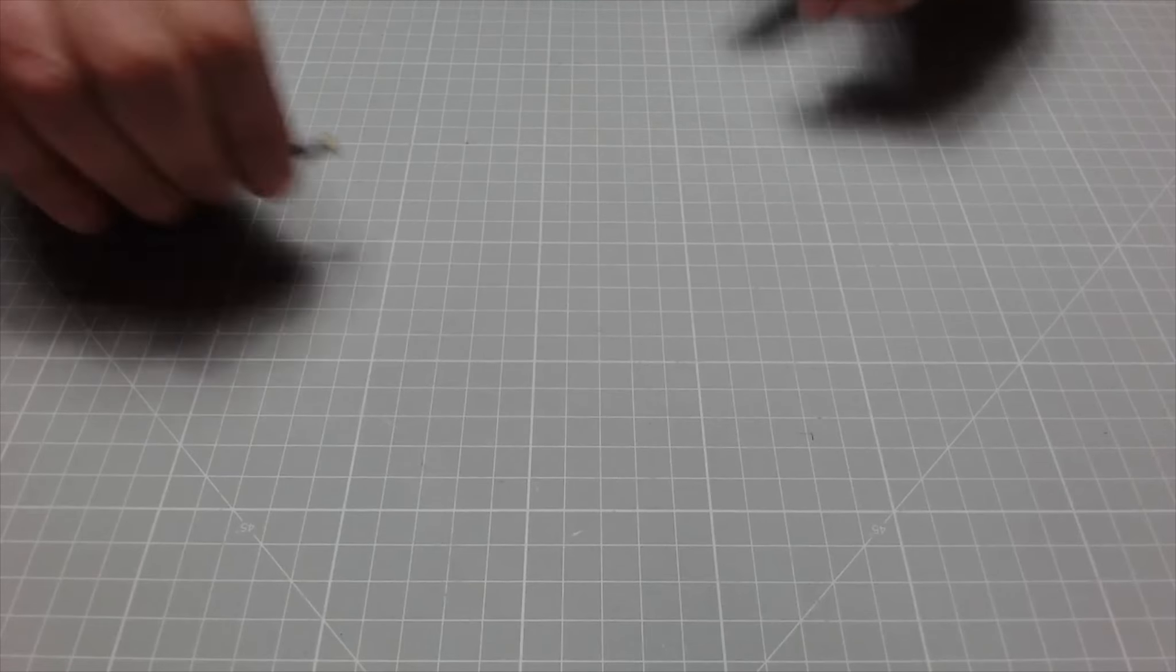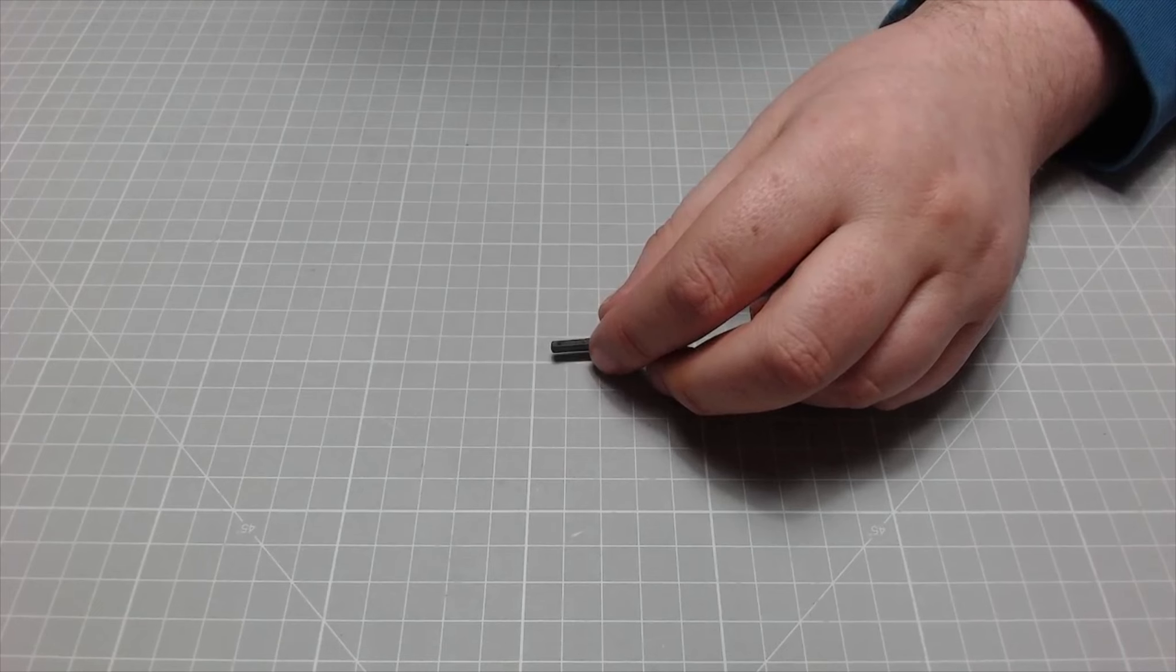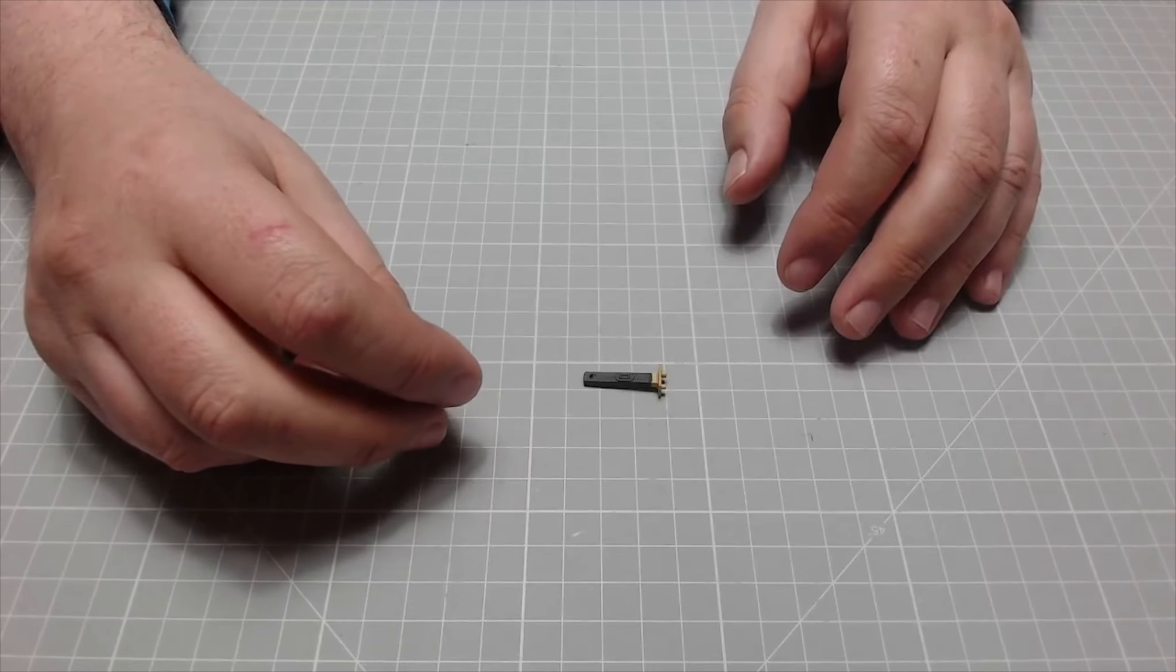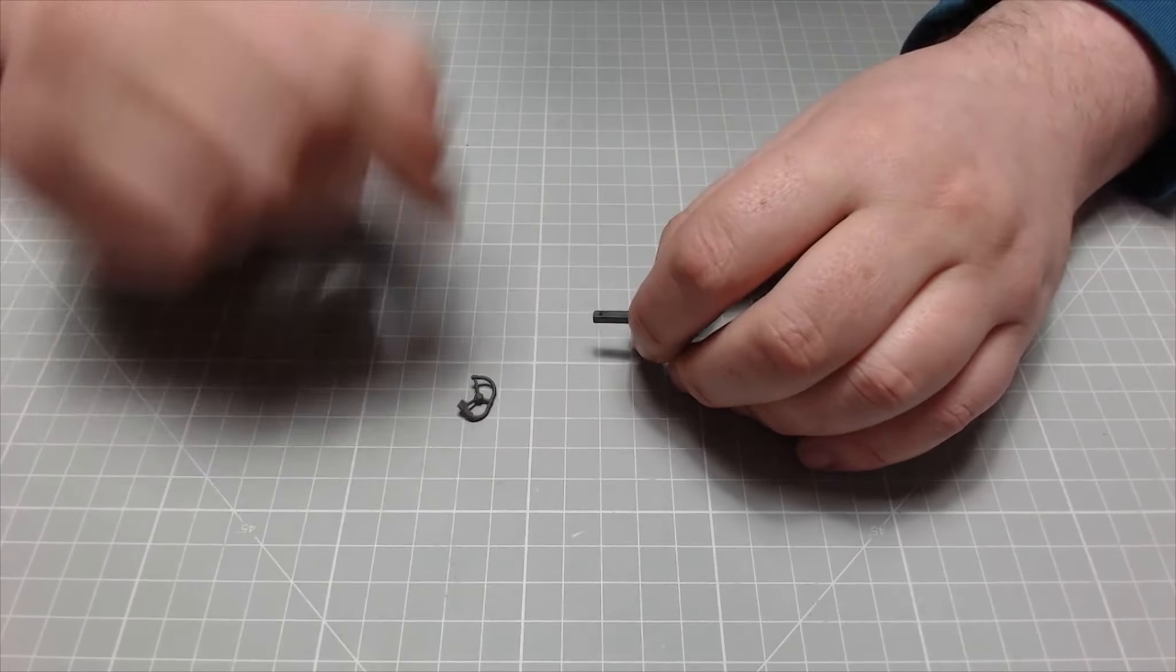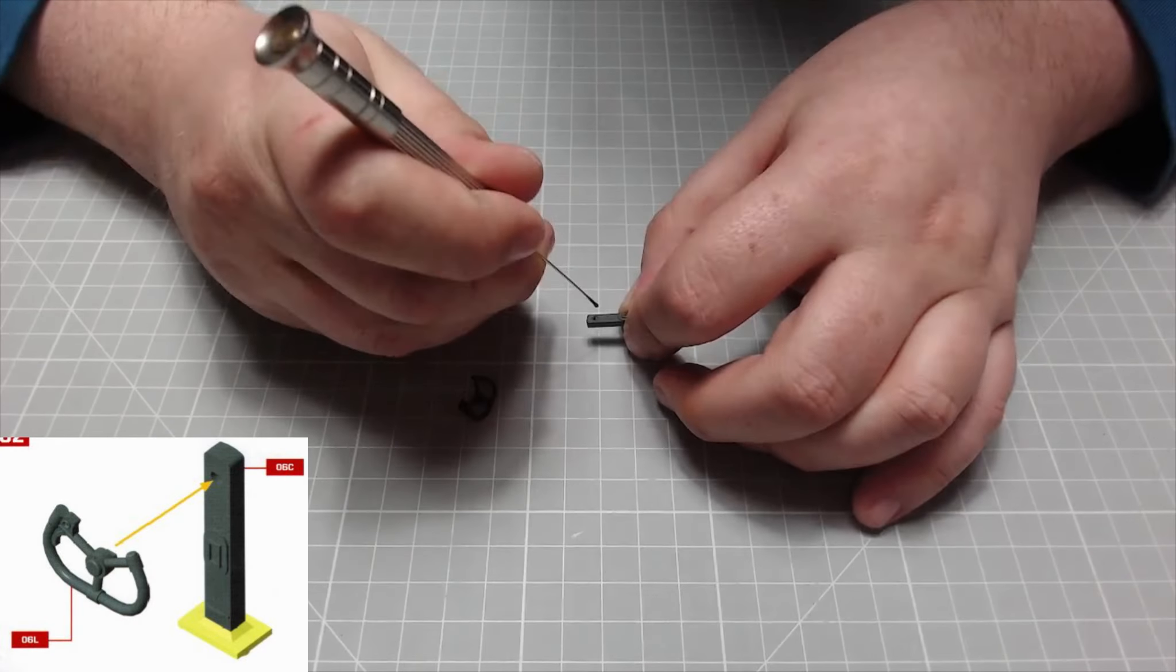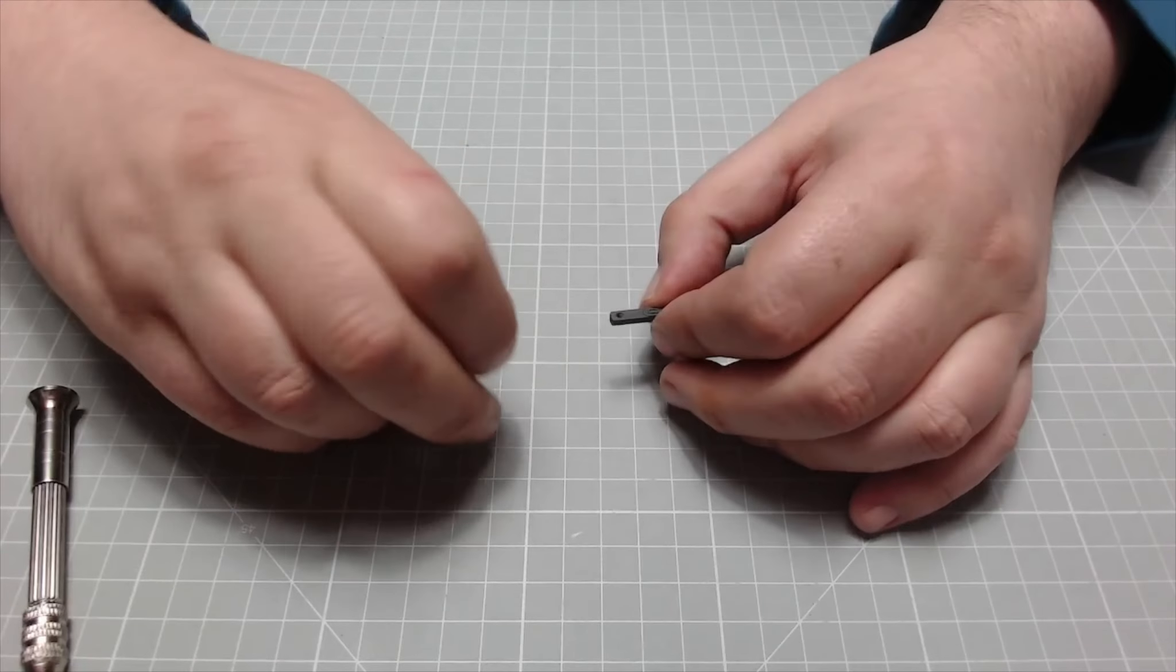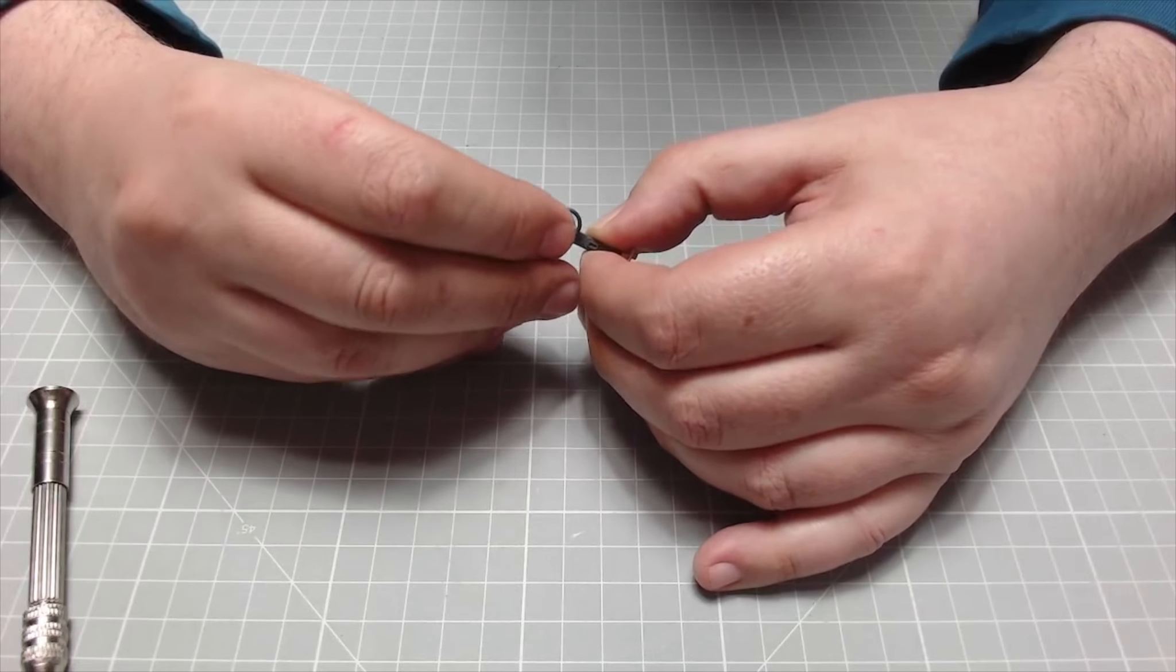The next bit we need is this bit here, this would be the control yoke and the control column. We need to put that into place, so just a little bit of glue in there. It's half moon shaped again, so it can only go in one way.